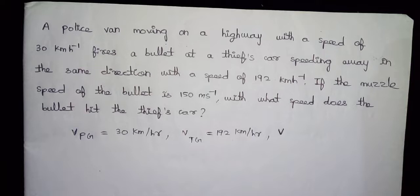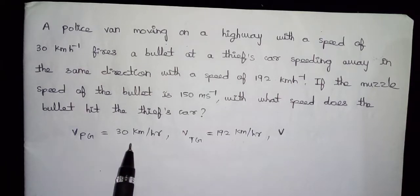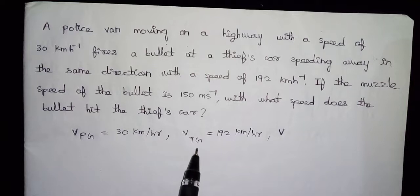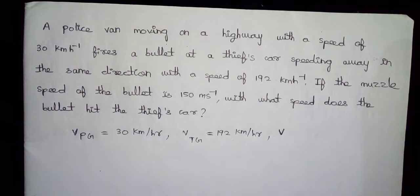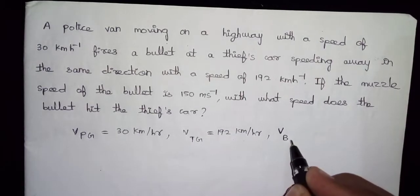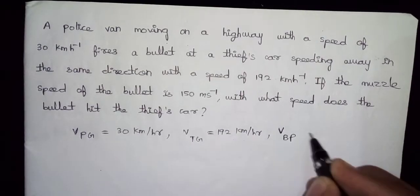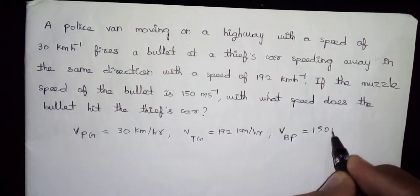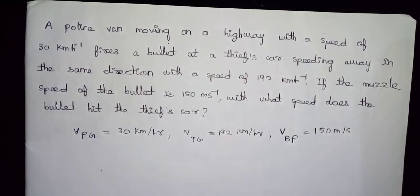The velocity of the police is 30 km per hour and the velocity of the thief is 192 km per hour. The speed of the bullet with respect to the police is 150 meters per second. First, we will convert the values from meters per second to km per hour.